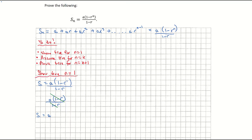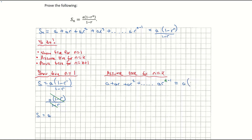Now we assume it's true for n equal to k. So we take our sequence A plus AR plus AR squared, and so on, until we get to AR to the power of k minus 1 — substituting k in for n. And we assume that is equal to A times (1 minus R to the power of k) all over (1 minus R). So we're assuming that is true.